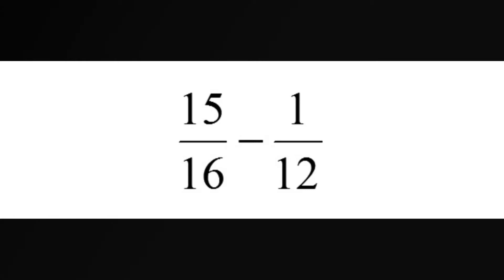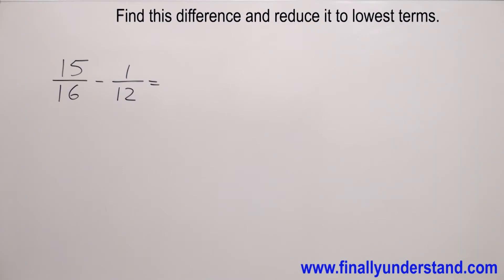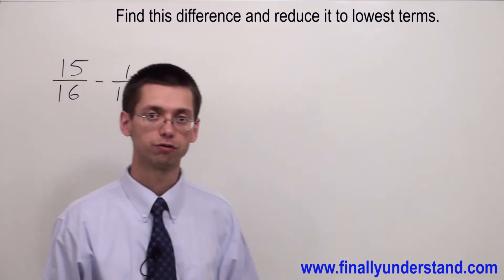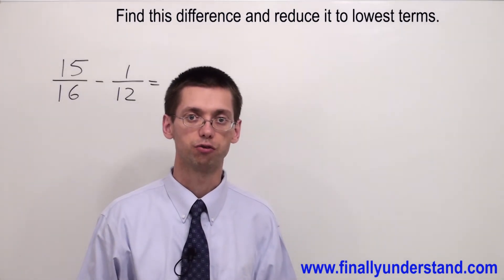15 over 16 minus 1 over 12. We have to find a common denominator in order to solve this problem. The common denominator for these two fractions is 48.